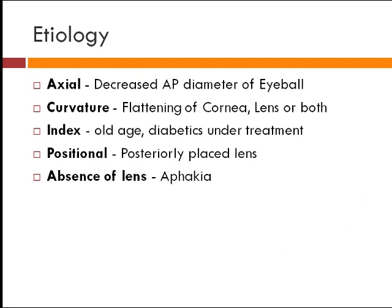Any alteration in the refractive index of the lens will lead to index hypermetropia. In positional hypermetropia, if the lens is slightly posterior to its normal position, it will induce hypermetropia. Then comes aphakia — aphakia means absence of the lens. If we assume the lens is absent, out of 59 diopters almost 15 to 16 diopters decrease, leading to aphakic hypermetropia. This can occur after surgery or after blunt trauma which leads to dislocation of the crystalline lens.